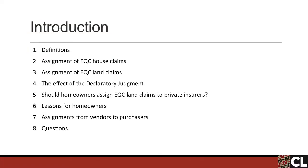We're going to go through a couple of very brief definitions. We're going to talk about assignment of EQC house claims as opposed to land claims. Then we'll move on to talking about land claims and the effect of the declaratory judgment from the High Court in December of last year. We're going to consider whether homeowners should assign their land claims to private insurers, evaluate the lessons for homeowners, and also talk about assignments from vendors to purchasers — one owner selling a property to another and assigning the EQC claim or a private insurance claim. Then we'll go to questions.